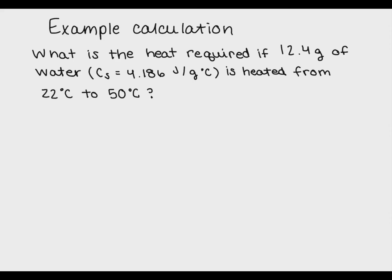Alright, let's do an example calculation. What is the heat required if 12.4 grams of water with a specific heat of 4.186 joules per gram degrees Celsius is heated from 22 degrees Celsius to 50 degrees Celsius? To start these problems, I like to write out my equation as well as each of my knowns and my unknown. In this case, I have a mass, I have a specific heat, and I have a change in temperature.